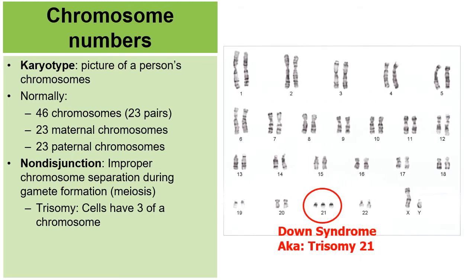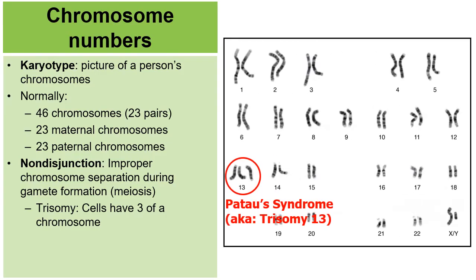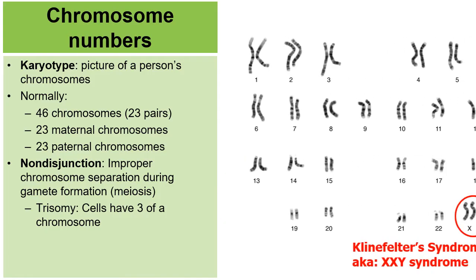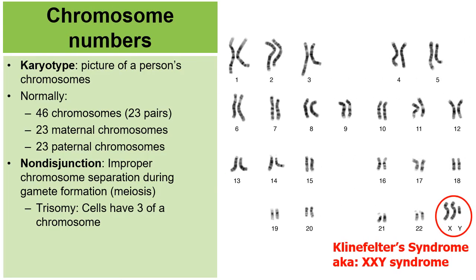For example, sufferers of Down syndrome, also called trisomy 21, have three chromosome 21s in their cells. Another example of a trisomy disorder is Patau syndrome, also called trisomy 13, where sufferers have three chromosome 13s in every one of their cells. And another example of a trisomy disorder would be Klinefelter syndrome, also called XXY syndrome, where they have three sex chromosomes.